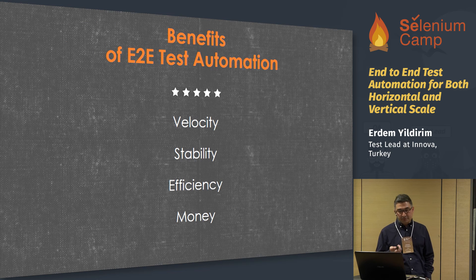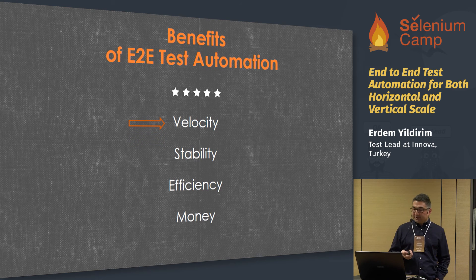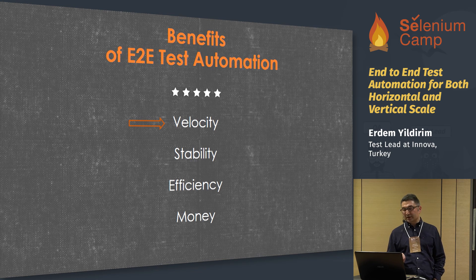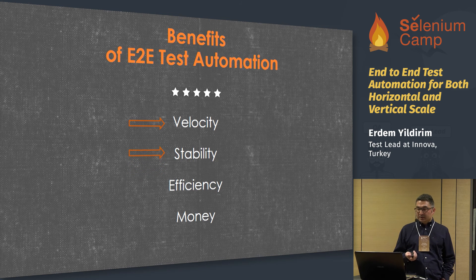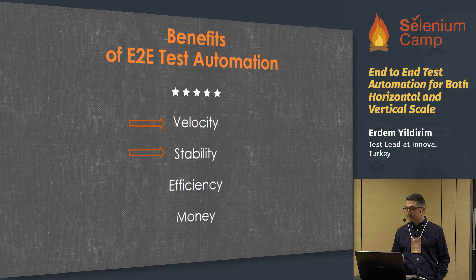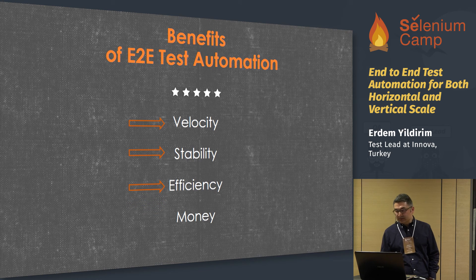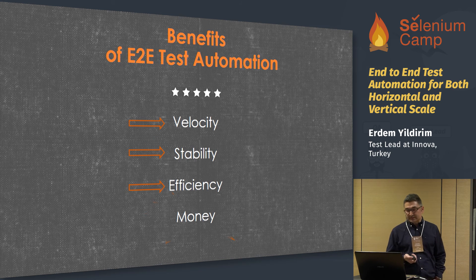Benefits of ETU test automation: velocity — faster bug-finding and fixation process, meaning reduced cycle time for software development. Stability — more stable and robust products, and greater confidence before deploying to production. Efficiency — we can test more with less effort. All three of these bullets ultimately mean saving money.